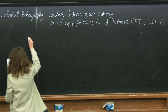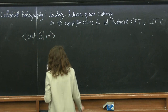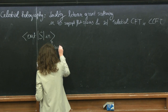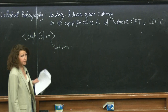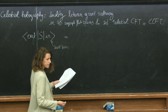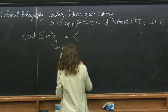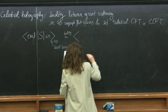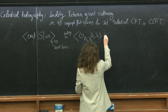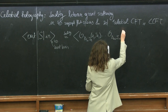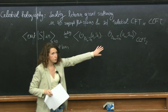Most concretely: a celestial amplitude is a scattering amplitude written in a convenient basis which manifestly exhibits SL(2,C) invariance. The duality proposal is that we describe the four-dimensional scattering process in terms of a correlation function in this celestial conformal field theory — CCFT₂. So if you want, it's a 4D bulk / 2D boundary type of duality. I will explain why this is a natural playground for holography in flat spacetime.